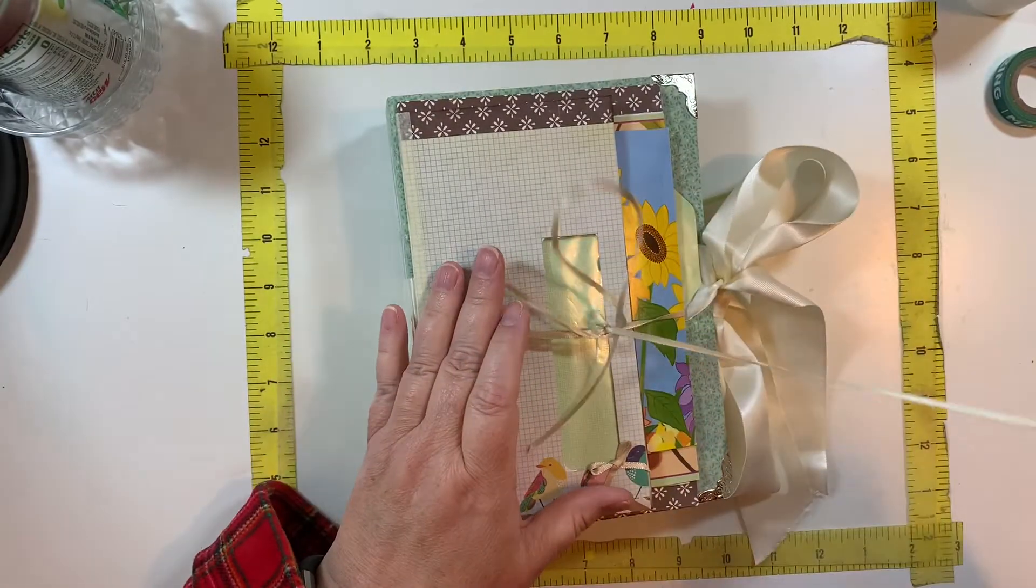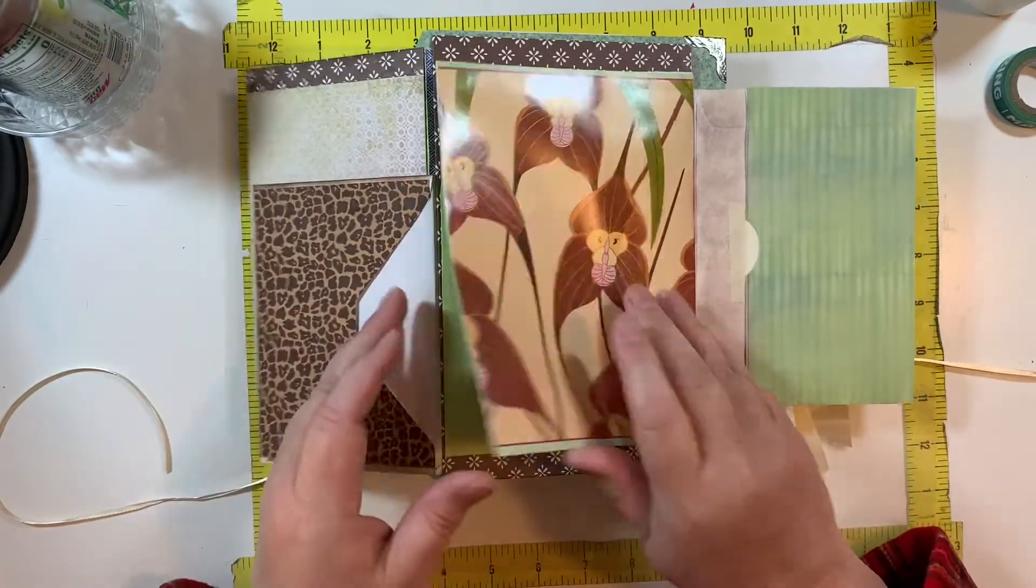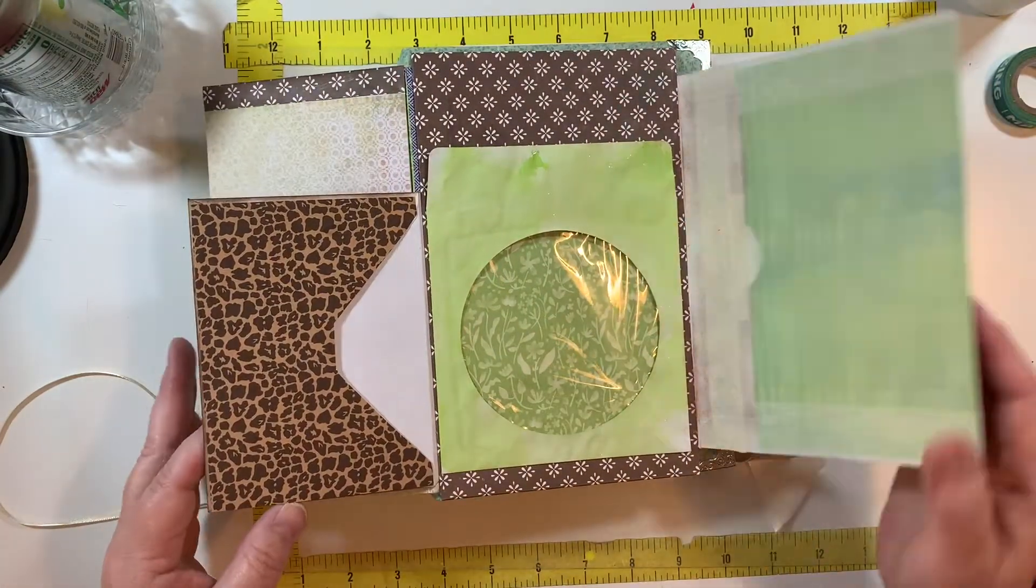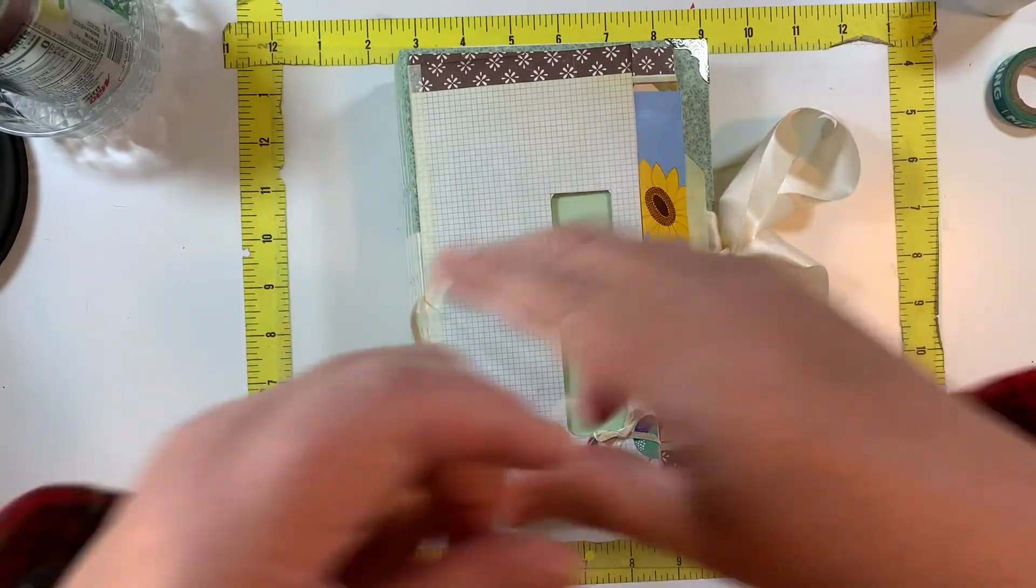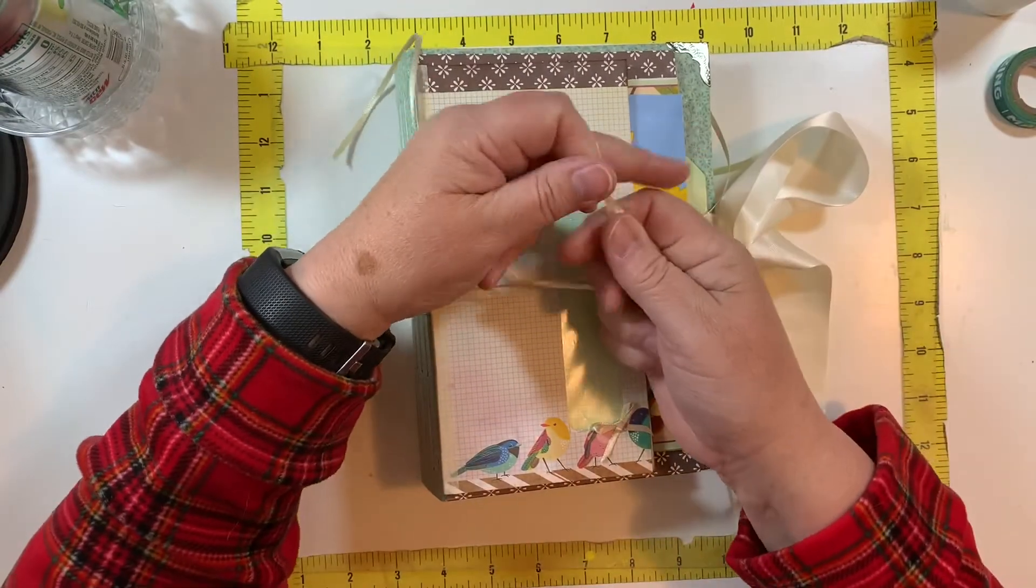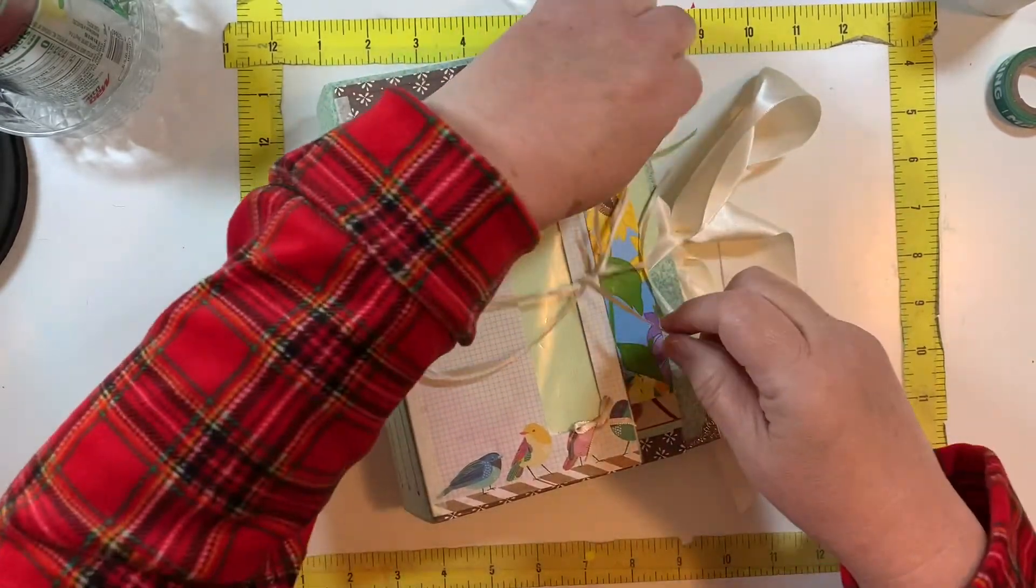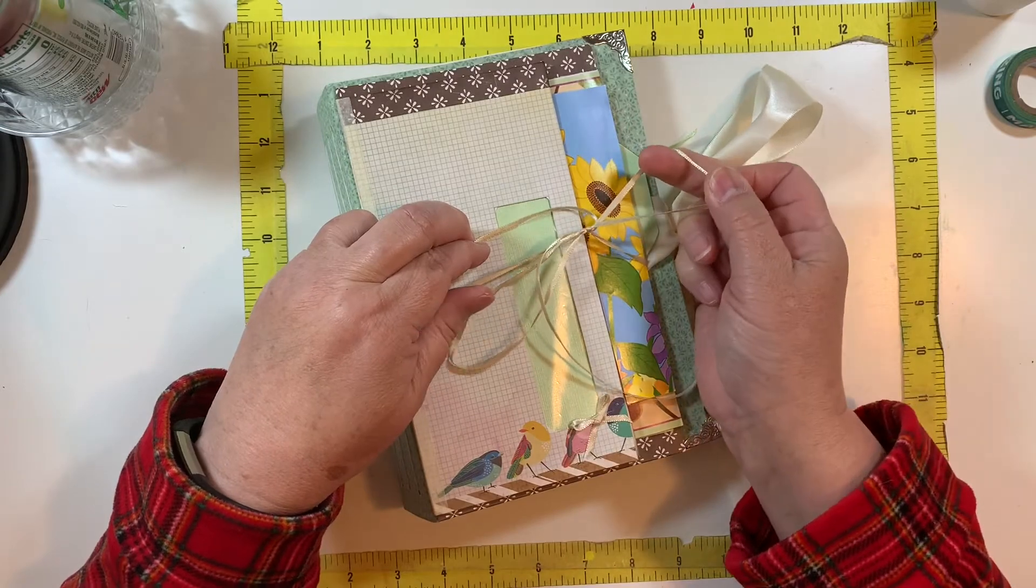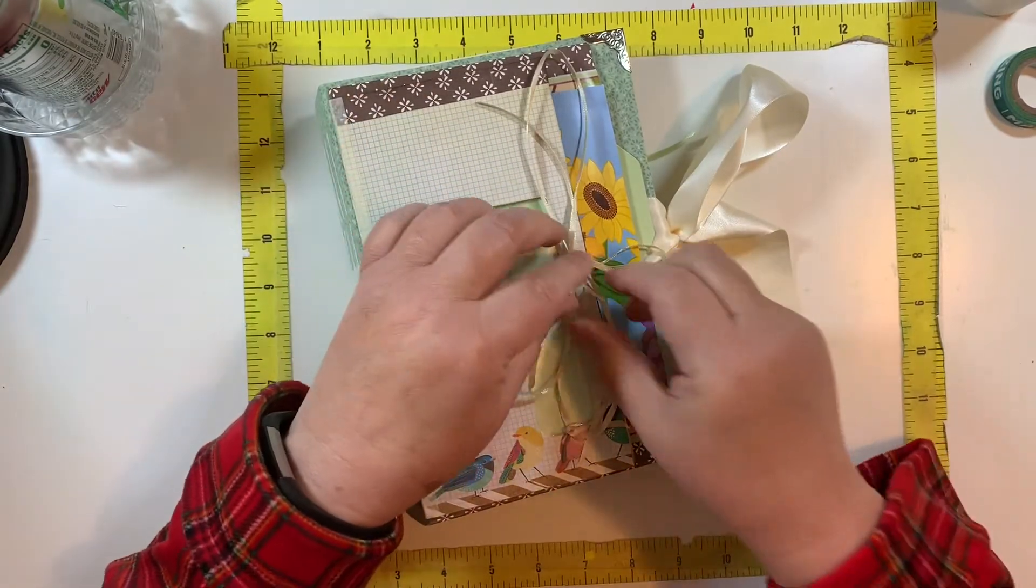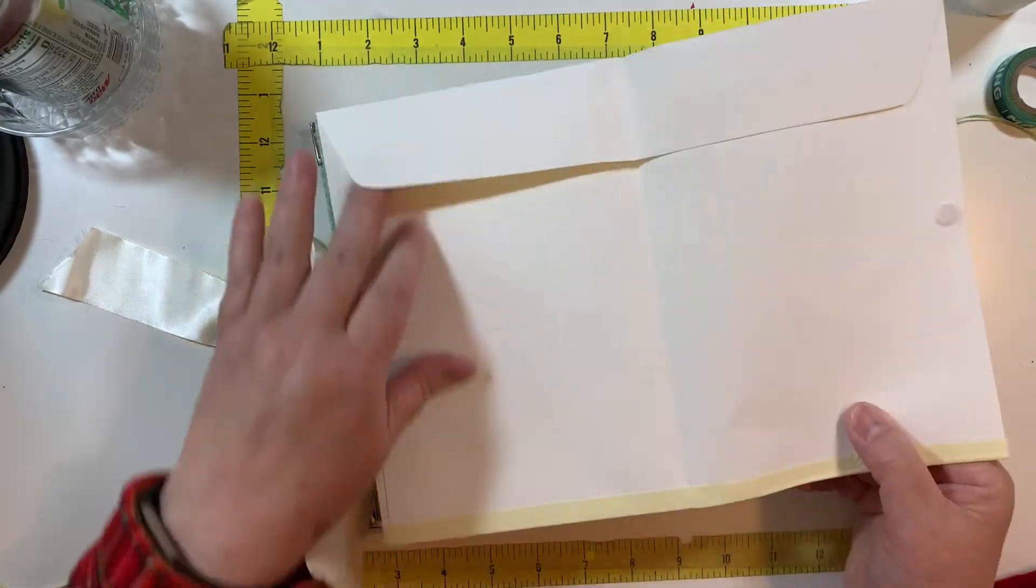So here's the cover, right? And we have our flip-outs with all these pockets. Obviously the recipient can always cut this down if they so desire. In the back we have the large pocket.